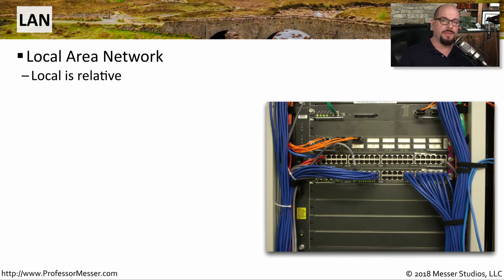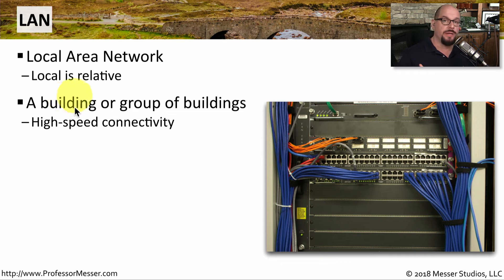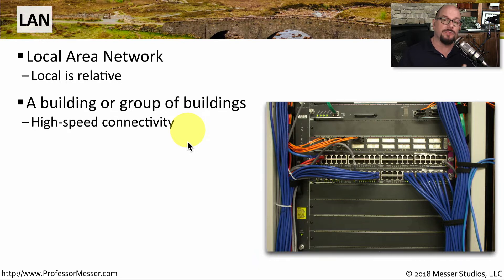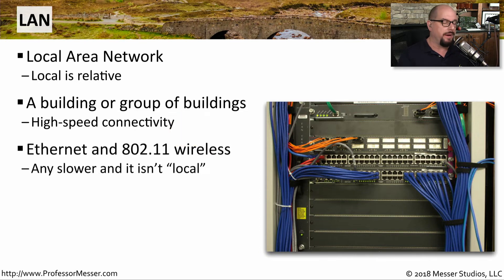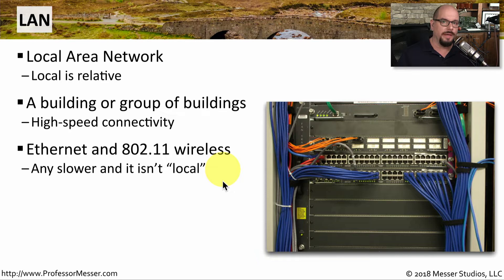One of the most common network types that most of us are familiar with is the local area network, or LAN. When we say LAN, we're really referring to the network that might be inside of a single building or one that spans a group of buildings in a centralized area. We usually think of local area networks as being high speed because all of the devices communicating are in this local area. Two common types of local area networks would be Ethernet networks and 802.11 wireless networks. If you are using a network that has a slower bandwidth than an Ethernet or an 802.11 network, then you're probably not on a local area network.